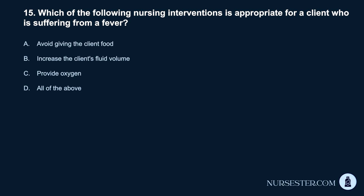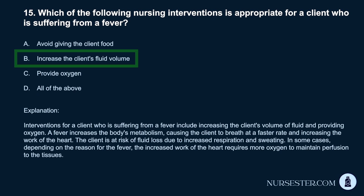Question 15. Which of the following nursing interventions is appropriate for a client who is suffering from a fever? a. Avoid giving the client food. b. Increase the client's fluid volume. c. Provide oxygen. d. All of the above. Correct answer: b. Increase the client's fluid volume. Interventions for a client with a fever include increasing fluid volume and providing oxygen. A fever increases the body's metabolism, causing the client to breathe faster and increasing the work of the heart. The client is at risk of fluid loss due to increased respiration and sweating.